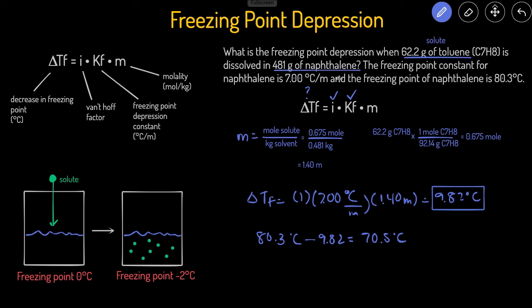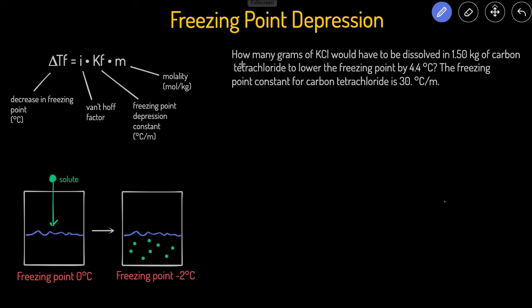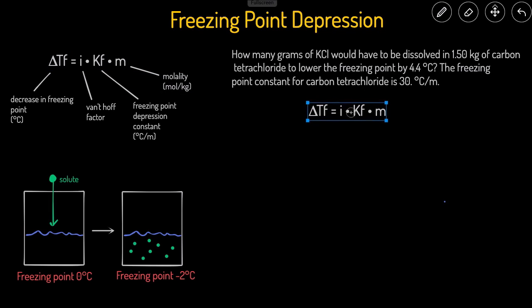Now let's take a look at a second problem. This problem asks us: how many grams of potassium chloride, KCl, would need to be dissolved in 1.5 kilograms of carbon tetrachloride to lower the freezing point by 4.4 degrees Celsius? So once again we're talking about freezing point depression. Let's start with the equation and look at what we already have and what we're trying to solve for.